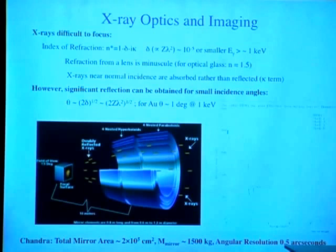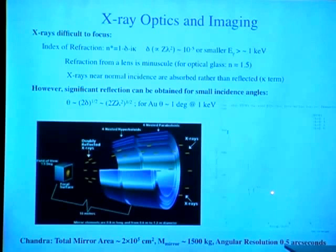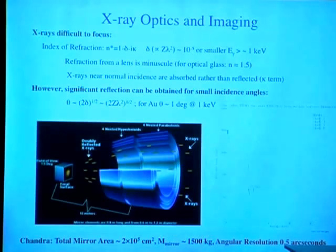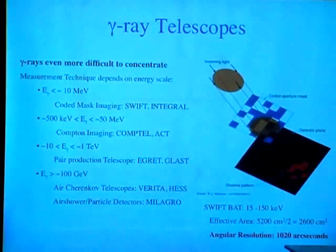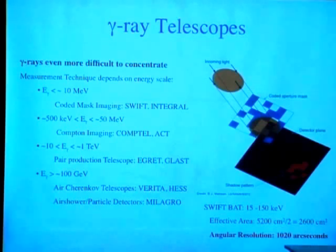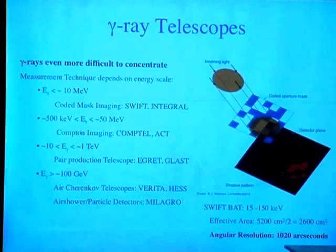If you add up the total areas in Chandra's mirror, you get close to a million square centimeters, but the effective area as a function of energy in the four to six keV band is only about two or three hundred square centimeters. So you have a mirror with huge mass but only a couple hundred square centimeters collecting area. At higher gamma-ray energies, you can use Compton scattering, pair production telescopes like Fermi, or at even higher energies, air shower Cherenkov telescopes. At lower energies, one normally uses a coded mask, as in the SWIFT experiment, achieving only a small fraction of a degree angular resolution.